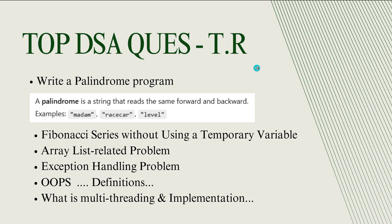Top DSA questions asked in technical interview rounds. First: write a palindrome program. A palindrome is a string that reads the same forward and backward — for example, 'madam' reads the same both ways. In interviews, they are focusing on DSA problems, so you should be aware of a few basic questions. Palindrome is the most important one — 5 to 7 out of 10 students face this question.